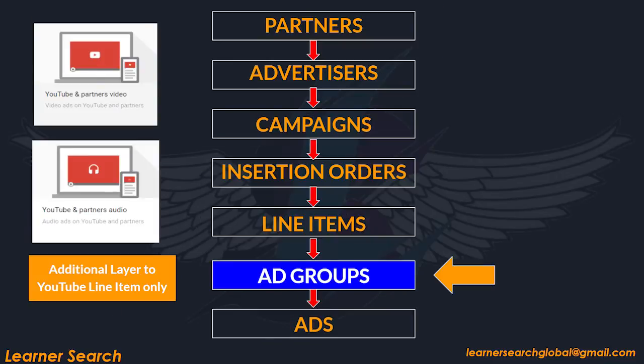In the case of YouTube, there is a small change in DV360 Hierarchy. A new layer called ad groups comes into picture after line item. The line item holds a number of ad groups, and each ad group contains ads. Ads are nothing but creatives here. I hope you got an idea of DV360 Hierarchy, and we shall discuss each one in detail in the next slides.